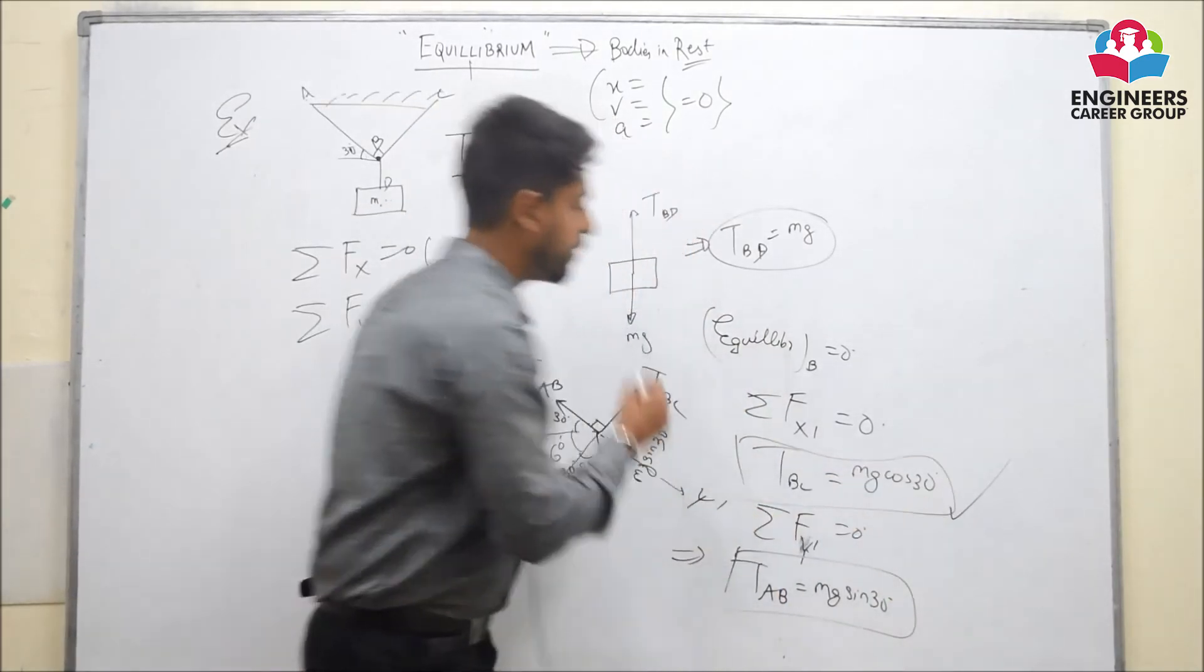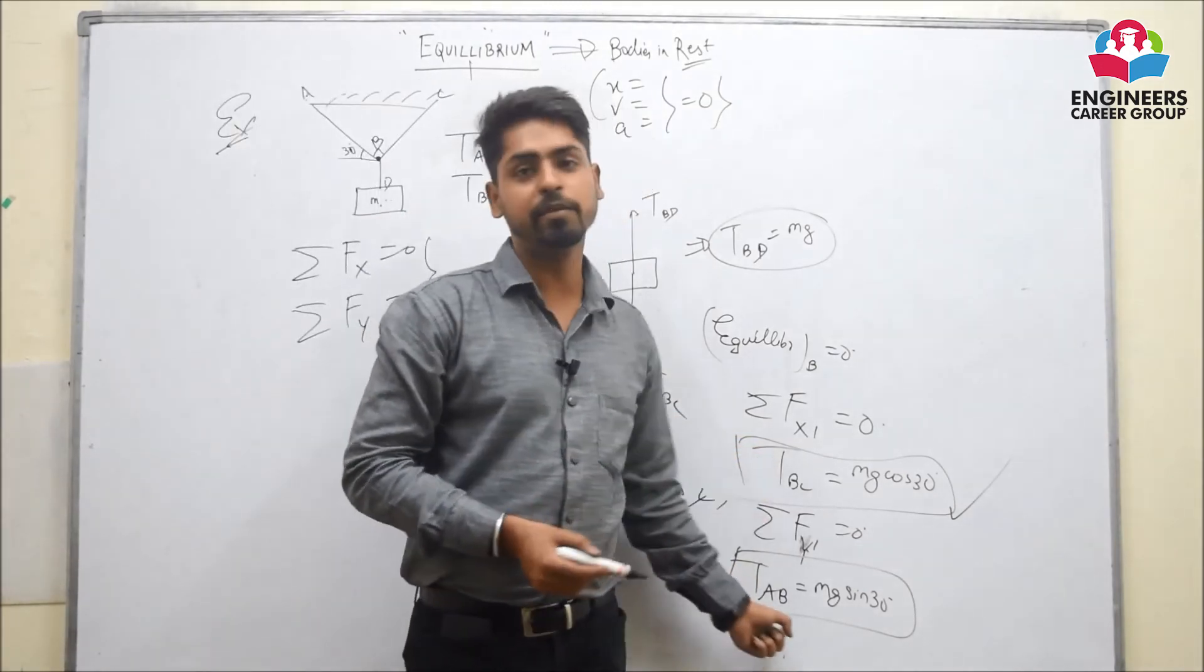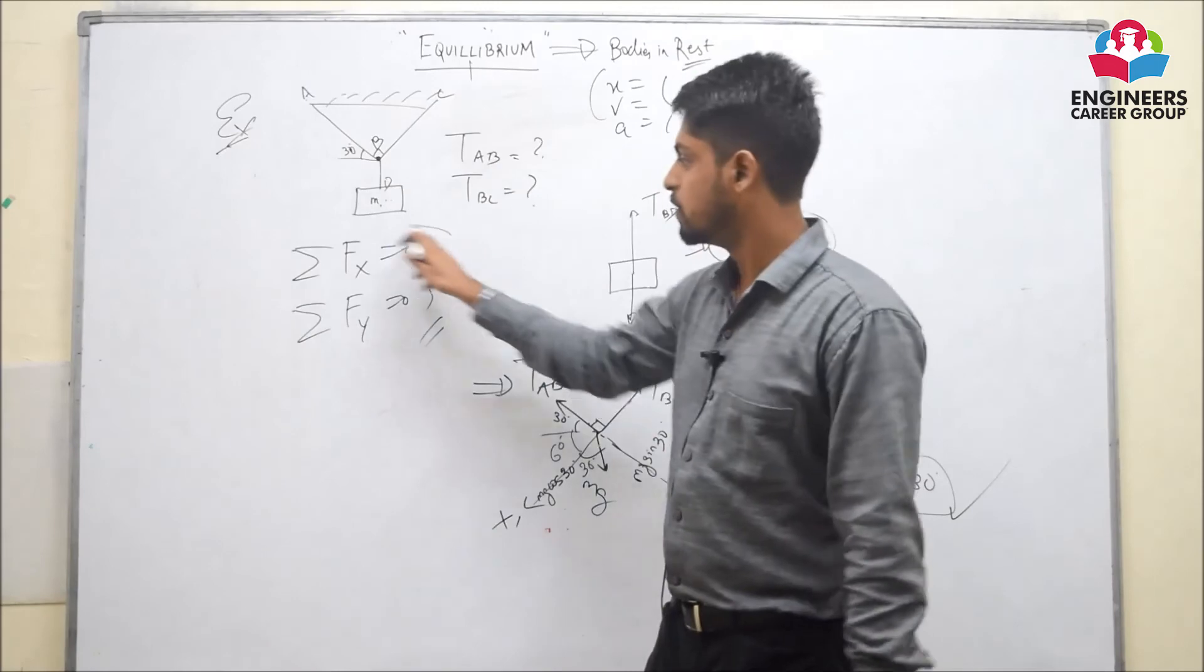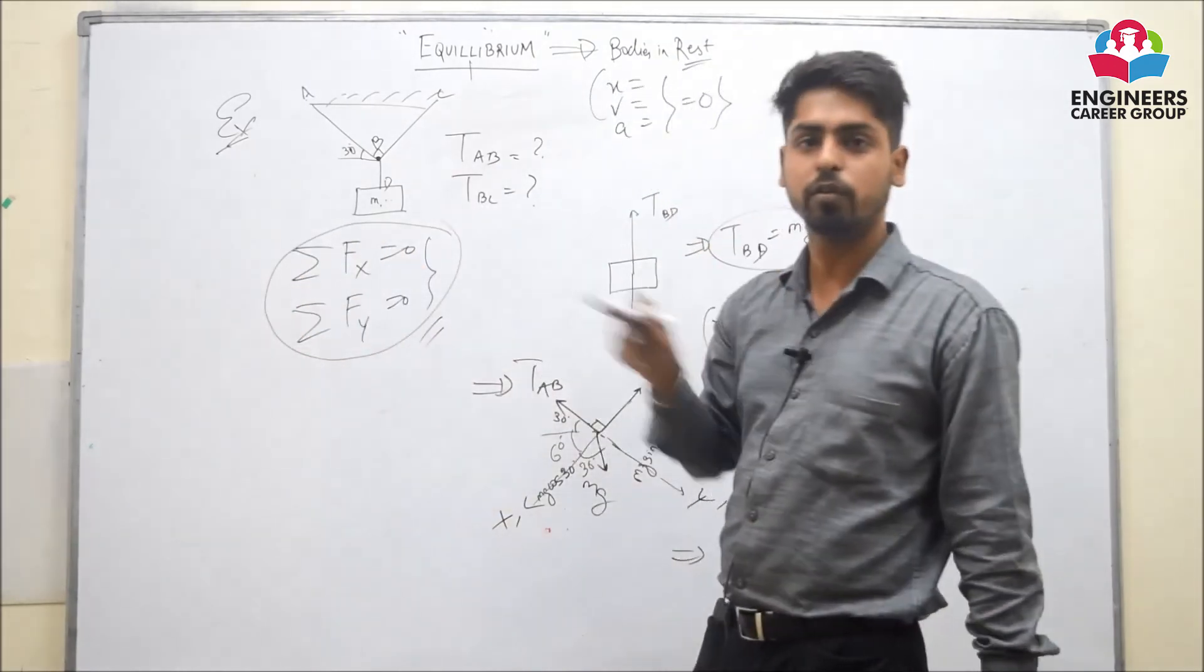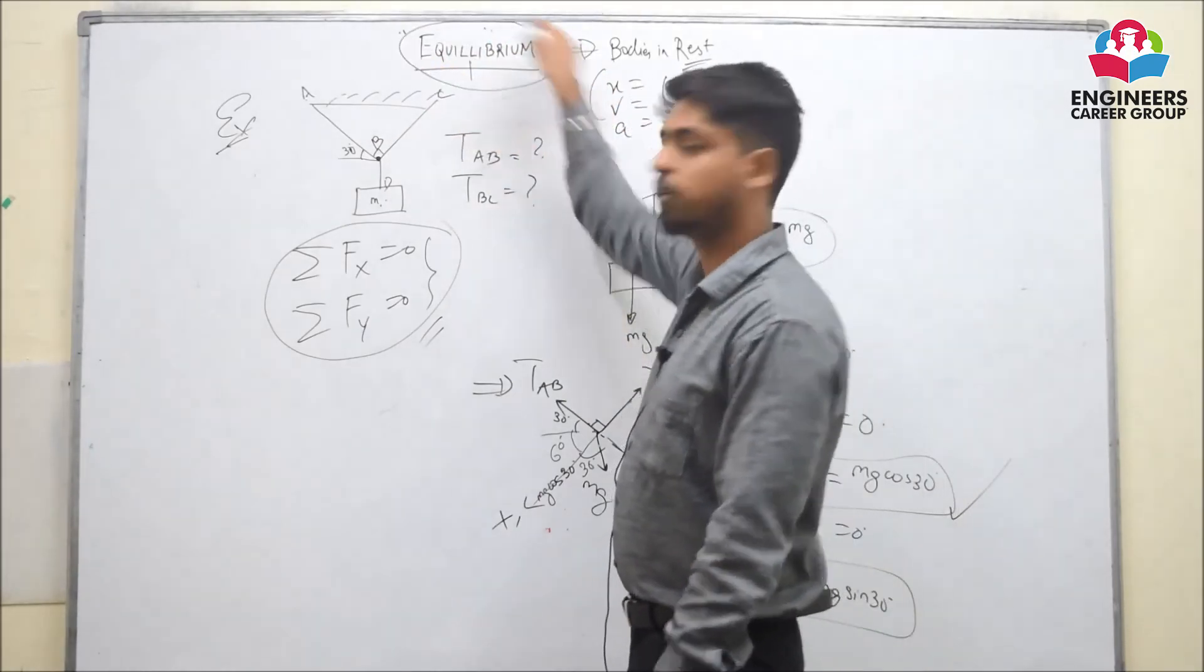Now, considering the equilibrium of this body B, we can easily find the tensions T AB and TBC using this principle, summation of forces equal to 0 in all the directions, whichever direction we choose if the body is in equilibrium.